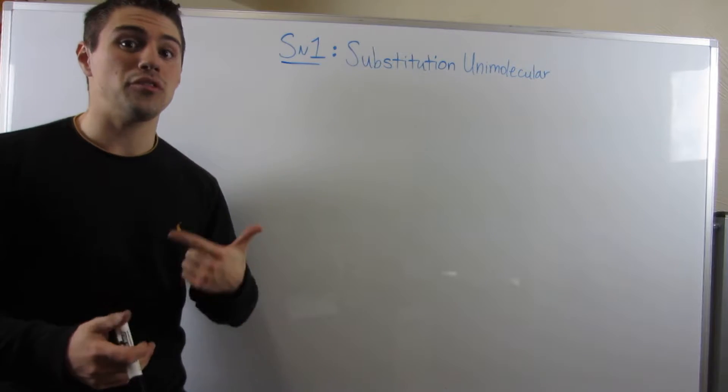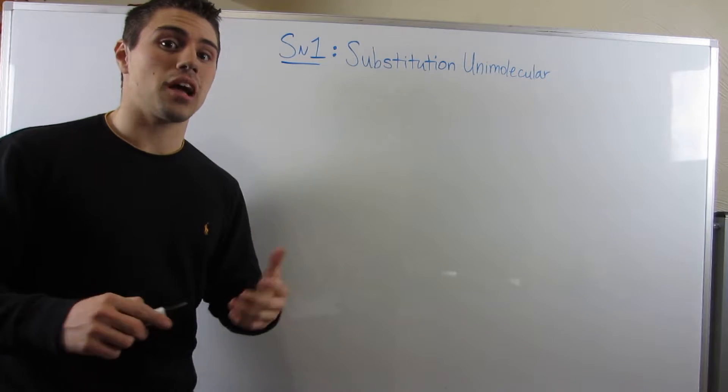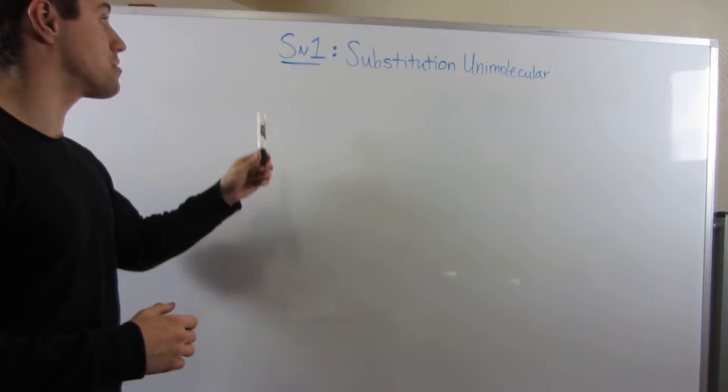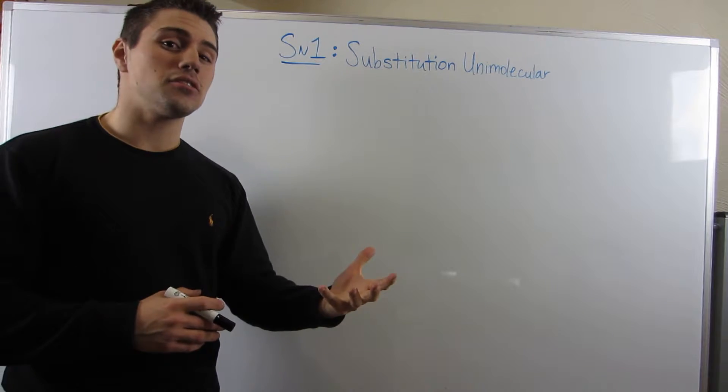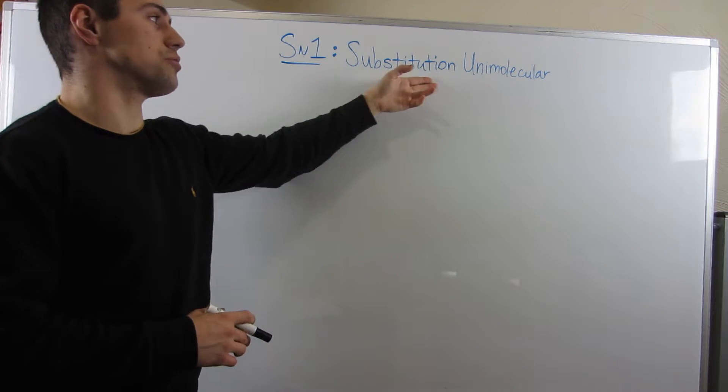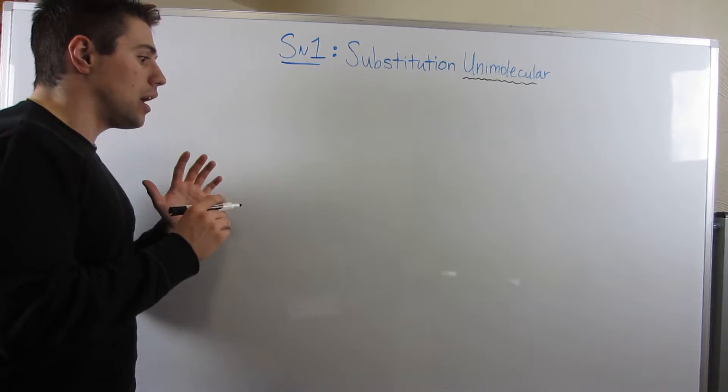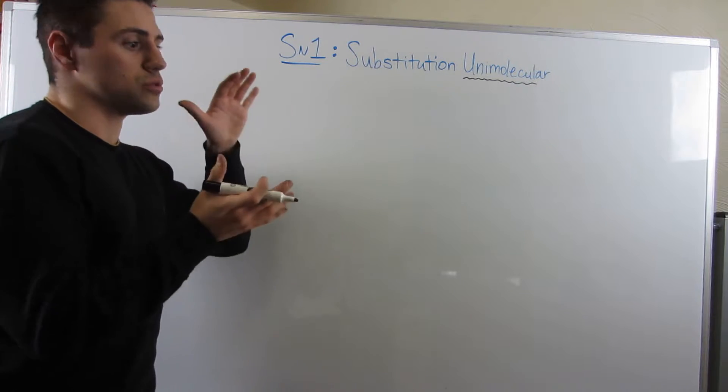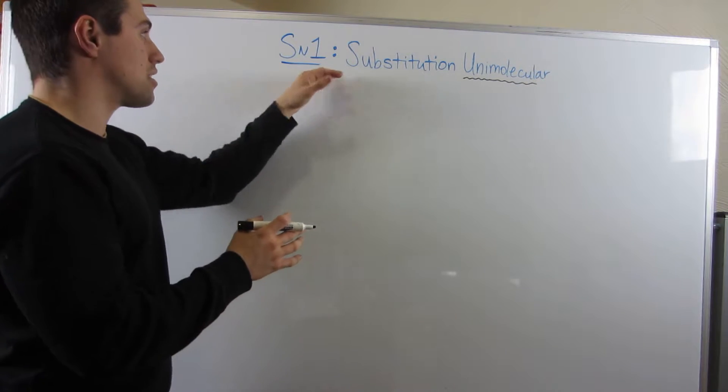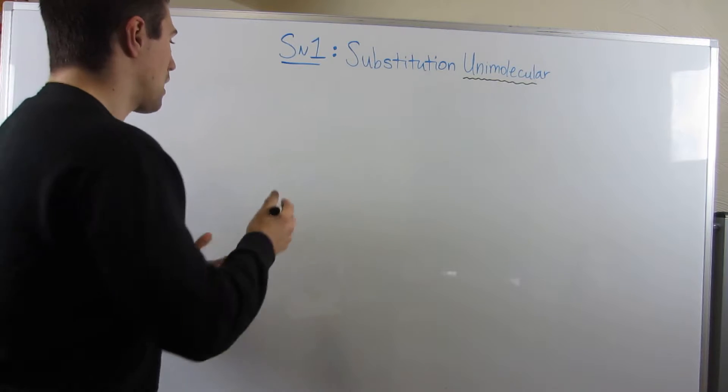So we've covered SN2, we've covered E2. Now it's time to tackle a little something called SN1. It's kind of like SN2, still a substitution reaction. Let me give you an example and show you the mechanism, and then we'll tackle what you look for when you see SN1 and how you go about it.